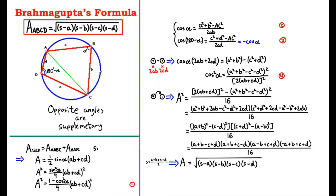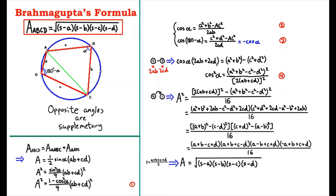Now we need to eliminate the sine from the equation, since the final formula has no sine. To do that, we square both sides and apply the Pythagorean identity where sine squared alpha equals 1 minus cosine squared alpha, giving us this equation.